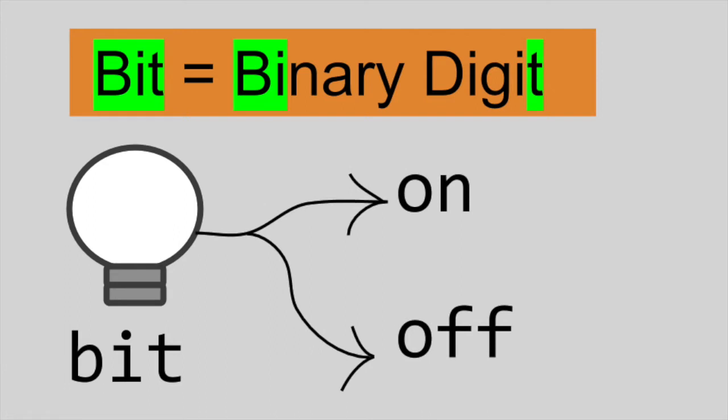In computing, a bit represents a single on or off signal inside of an electrical circuit. These on or off values are represented by the numbers one and zero, respectively.